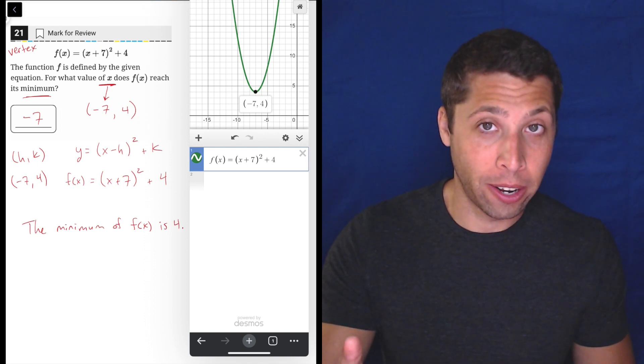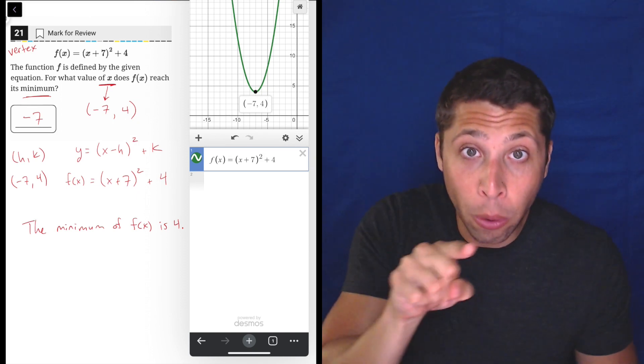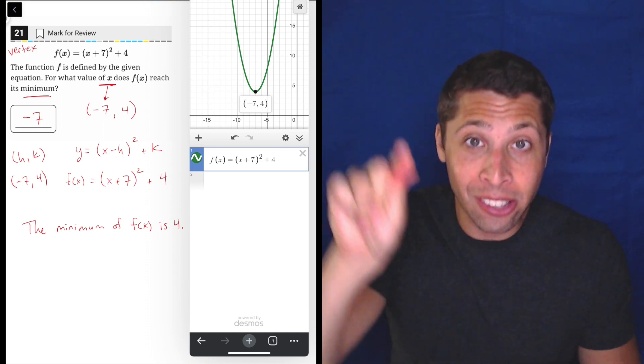That's the y-coordinate, right? The minimum of f(x) is four. That green line goes down to four, hits that number, and then pops back up, right? So that's as low as it goes. That's its minimum.